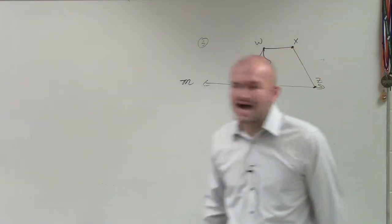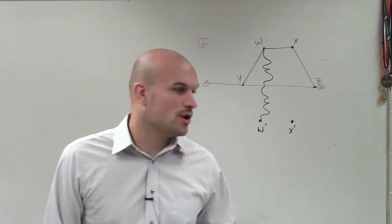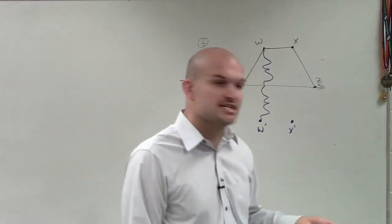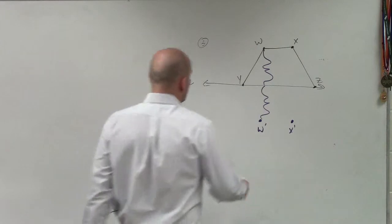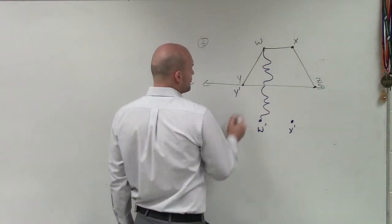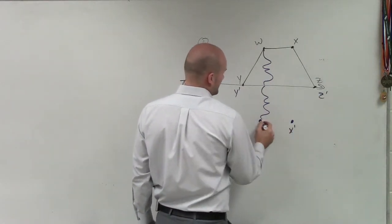Now, you can notice that Y and Z do not have any distance or separation from the reflection line. So when I redraw this, Y prime is going to be the same point and Z prime is going to be the same point.